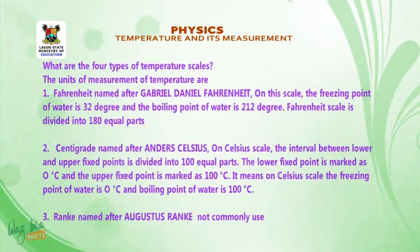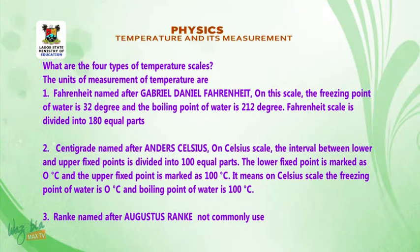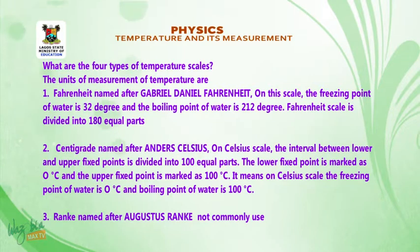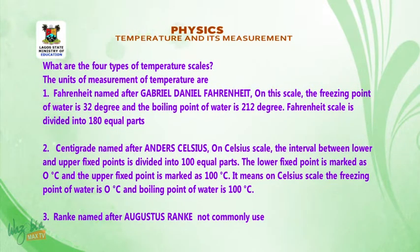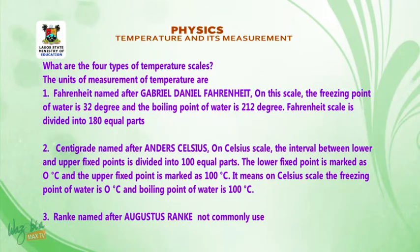Heat is measured in joules, named after James Prescott Joule. The units of measurement of temperature include: 1. The Fahrenheit scale, named after Gabriel Daniel Fahrenheit. On this scale, the freezing point of water is 32 degrees and the boiling point of water is 212 degrees. The Fahrenheit scale is divided into 180 equal parts.